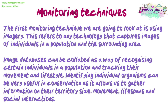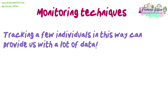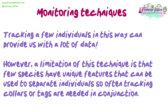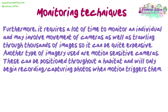Identifying individual organisms can be very useful in conservation as it allows us to gather information on their territory size, movement, lifespans, and social interactions. Tracking a few individuals in this way can provide us with a lot of data. However, a limitation of this technique is that few species have unique features that can be used to separate individuals, so often tracking colours or tags are needed in conjunction. Furthermore, it requires a lot of time to monitor an individual and may involve movement of cameras, as well as trawling through thousands of images, so it can be quite expensive.